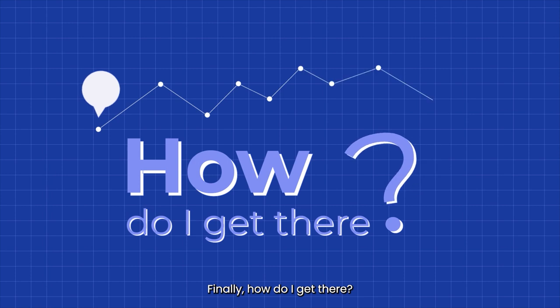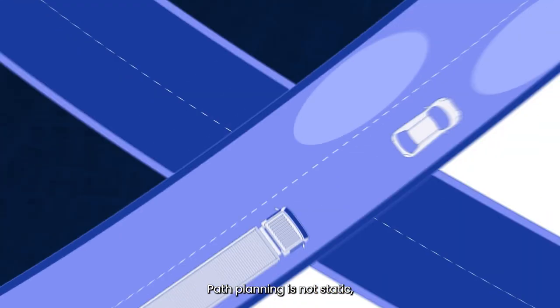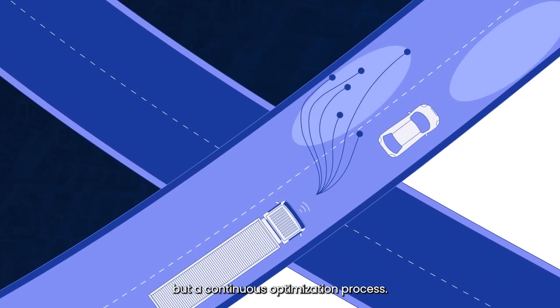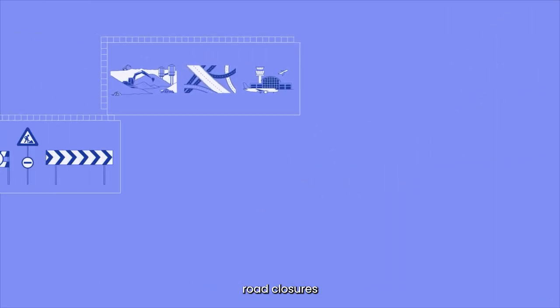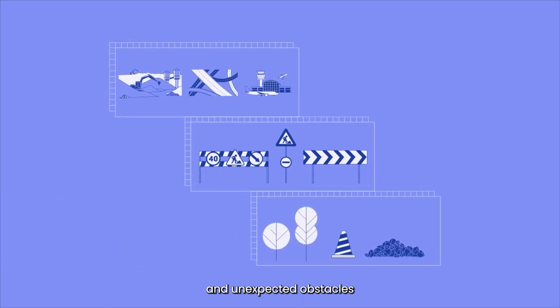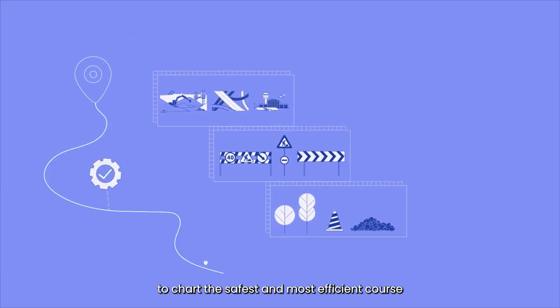Finally, how do I get there? Path planning is not static, but a continuous optimization process. It considers traffic patterns, road closures, and unexpected obstacles to chart the safest and most efficient course.